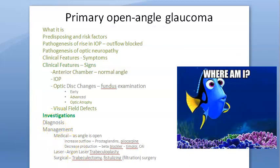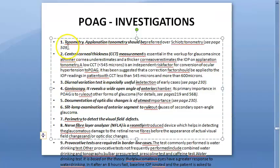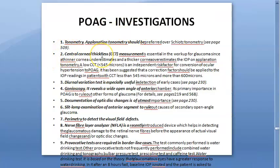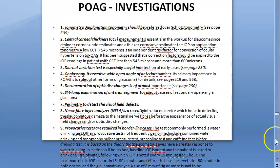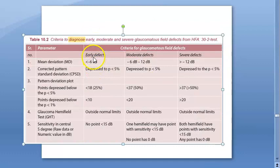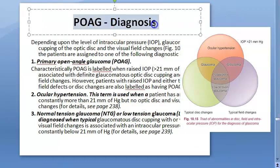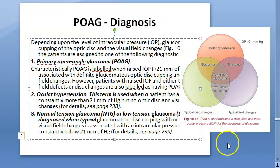We are done with visual field effects. Next are investigations: tonometry, central corneal thickness, diurnal variation test, gonioscopy, slit-lamp examination of anterior segment, documentation of optic disc changes, perimetry to detect visual field effects, nerve fiber analyzer, and provocative tests for borderline cases. For diagnosis, the key things to check are intraocular pressure, optic disc, and visual field effects.